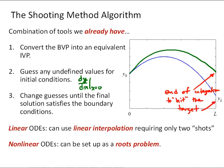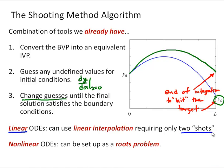That target is always going to be our second boundary condition, in this case y_L. So we'll change those guesses until we find the initial guess that hits the target. In the previous video, we saw that for a linear differential equation, we only need two shots, and then we can use linear interpolation to find the initial guess that hits the target.